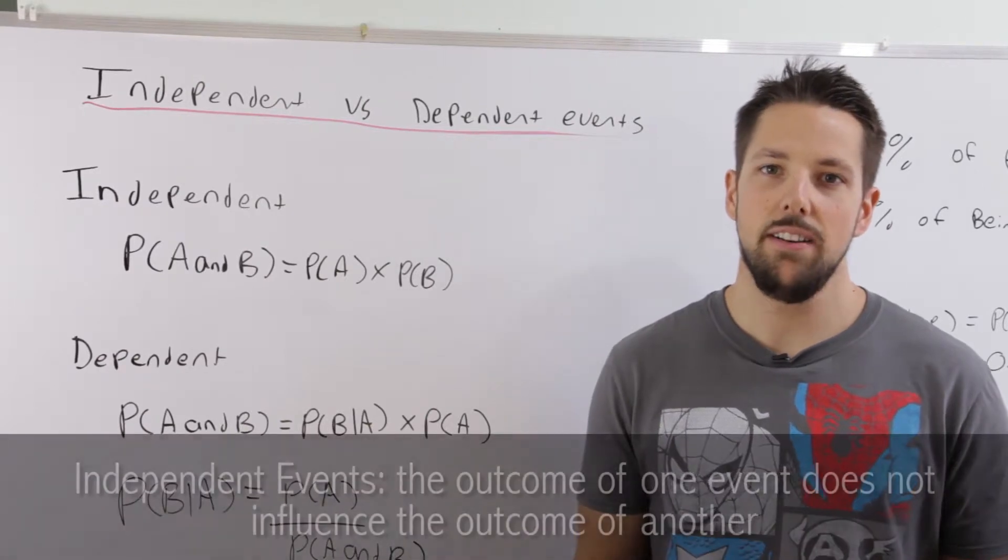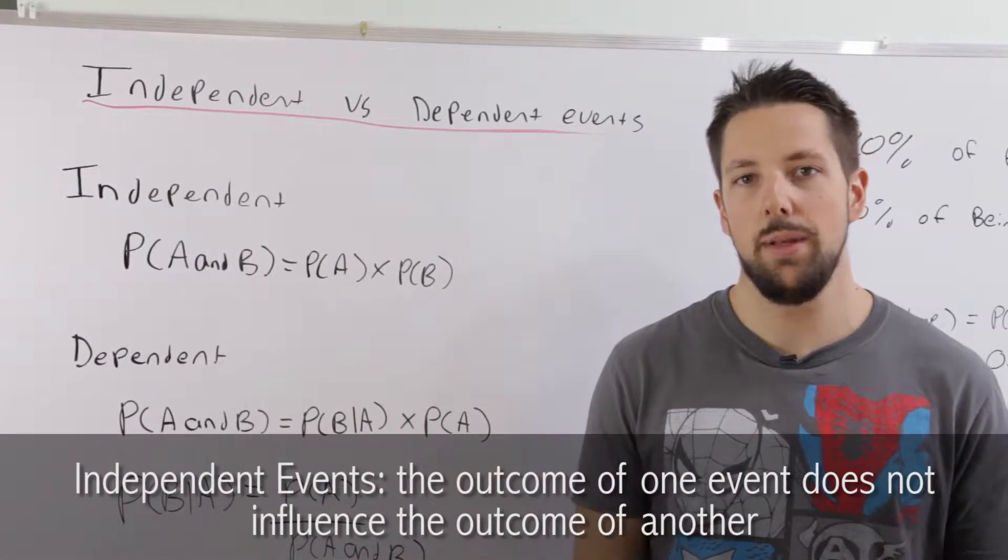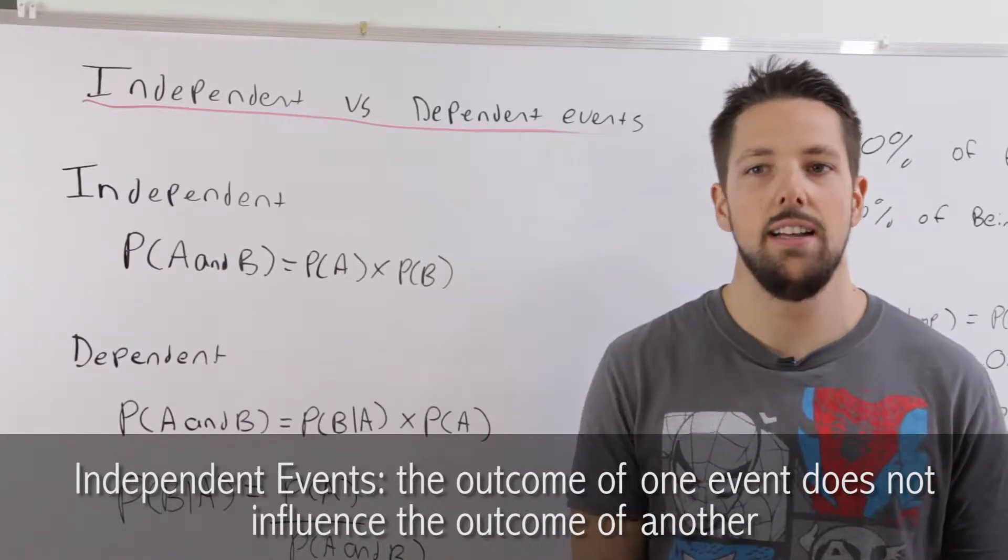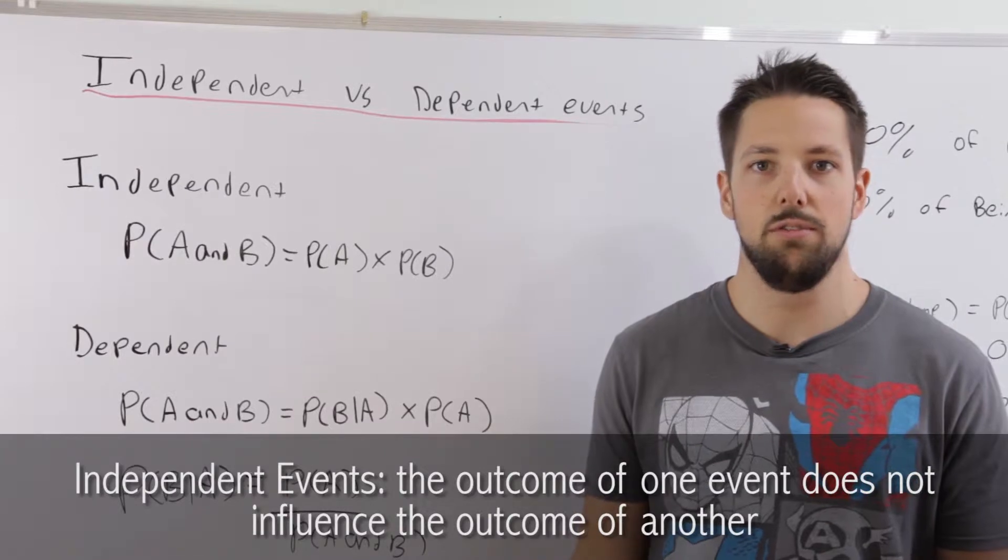Independent events are when the two stages are not related. That would be like flipping a coin and rolling a die. The outcome of the first event, flipping a coin, has no effect on the probability of rolling a die.